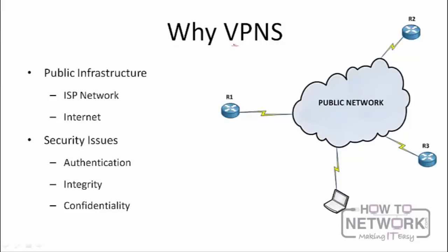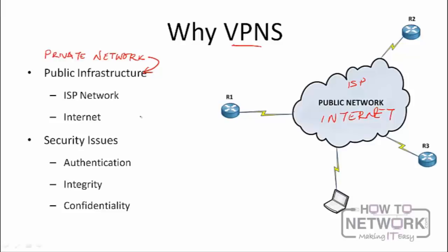A VPN is a virtual private network — it's a private network that runs over a public infrastructure. The public infrastructure can be the ISP network or the internet. It's any infrastructure that you pay for but do not own. In a VPN we use public infrastructure to transport private information, creating a private network between, for example, Router 1 and Router 2 both connected to the internet.